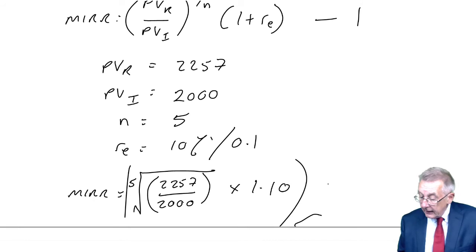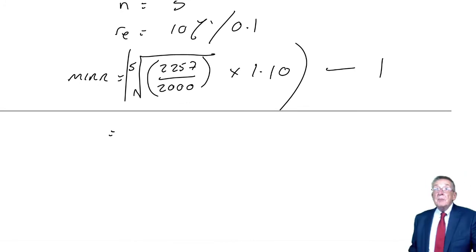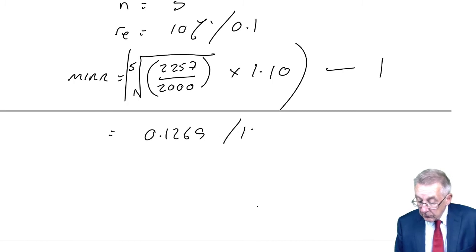We multiply whatever we get from that by 1 plus RE, 10%, 1.1. And then of the whole thing we'll subtract 1. You must have a scientific calculator for this exam. Make sure you can press the buttons. But here it's the 5th root of 2257 divided by 2000 times 1.1 minus 1.